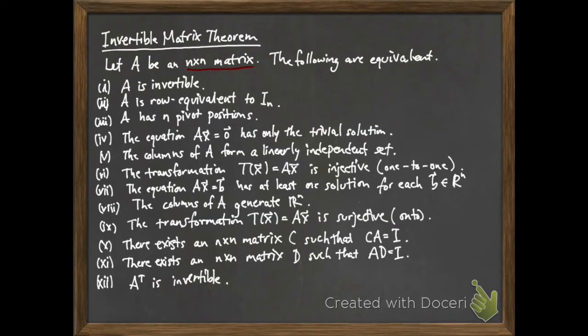Let me highlight a few things to take notice of. First, the invertible matrix theorem is only a statement about square matrices — n by n, so the number of rows has to equal the number of columns. These first three statements are ones we've already seen are equivalent when talking about inverses: you row reduce to see if you can get to the identity matrix, which is equivalent to having n pivot positions for an n by n matrix, and that gives an explicit way to compute the inverse.